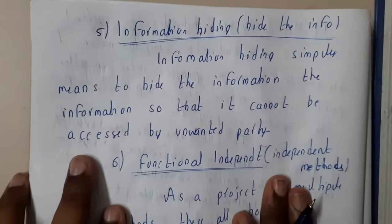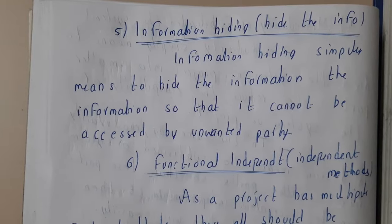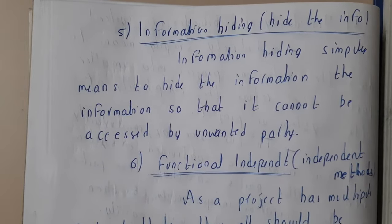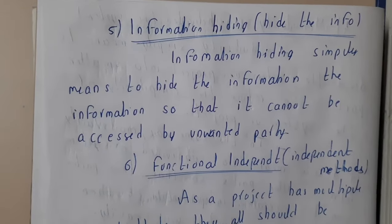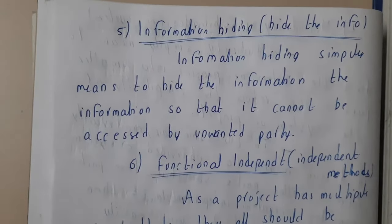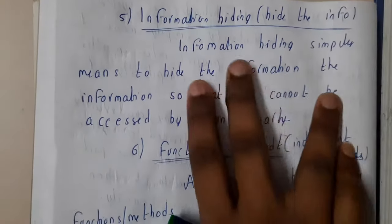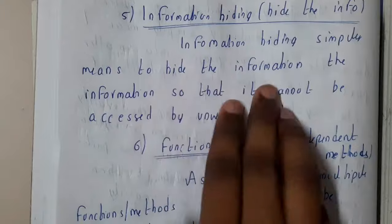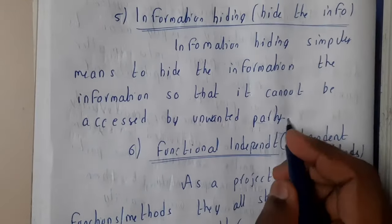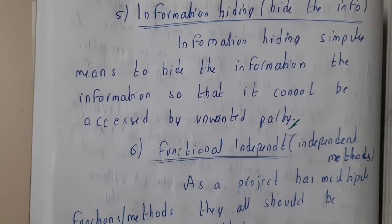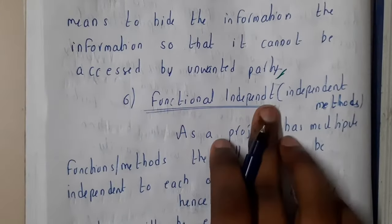Now, information hiding. Whenever you are designing a project, you need to hide some information that is not relevant to the user — every piece of information is not shown to the user. There could be information you want to hide from users or even hackers. Information hiding simply means to hide information so that it cannot be accessed by unwanted parties.